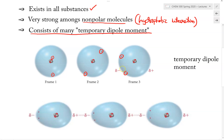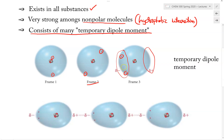The reason why is as follows: anytime electrons are unevenly distributed, they are said to be polarized, and therefore they have a dipole moment. In this case, the dipole moment is called temporary because if we take a picture at frame four, it may go back to looking like frame two — and then it is gone again. But at frame three, the electrons are shifted to one side, making that side partially negative because it is rich in electrons, and the other side, which is lacking electrons, becomes partially positive.